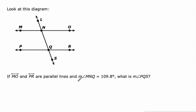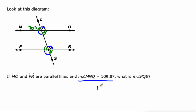Let's speed this up a little bit. The measure of angle MNQ is 109.8. MNQ — that's this one. Vertical, corresponding, alternate interior — all of those are 109.8. All the other angles are going to be 180 minus 109.8, which is 70.2. So PQS — that is a corresponding angle to our original one, so it's going to have the same measure: 109.8.